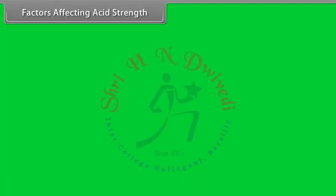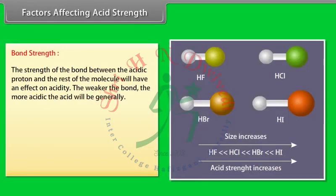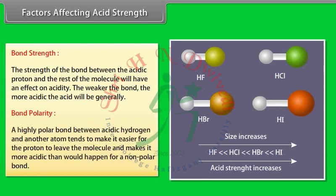Two factors affect acid strength. First, bond strength: the weaker the bond between the acidic proton and the rest of the molecule, the more acidic the acid. Second, bond polarity: a highly polar bond between the acidic hydrogen and another atom makes it easier for the proton to leave, making the molecule more acidic than a non-polar bond would.